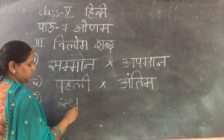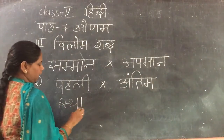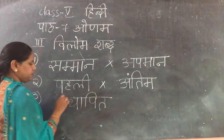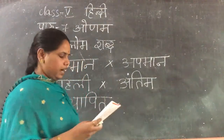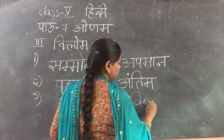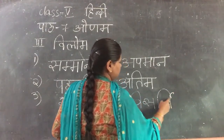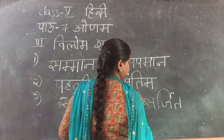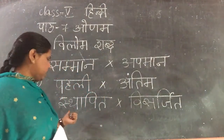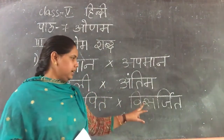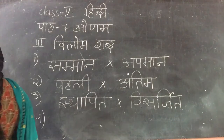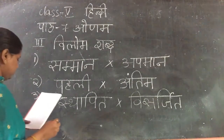Sthapit. Sthapit means Install — installing some idol of the god or some other statue. Sthapit is the installation of any idol, and Visarjit is the immersion of the idol in the water, or we can also say consigned. Sthapit means installed, Visarjit means immersed.